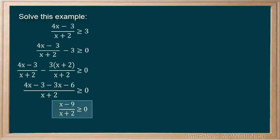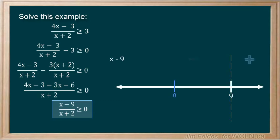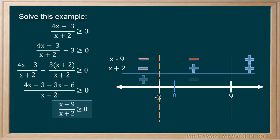We'll solve by evaluating only the signs. x minus 9 is positive when greater than 9. And x plus 2 is positive when greater than negative 2. Our intervals are once again positive, negative, positive, and we want the interval with values greater than 0.